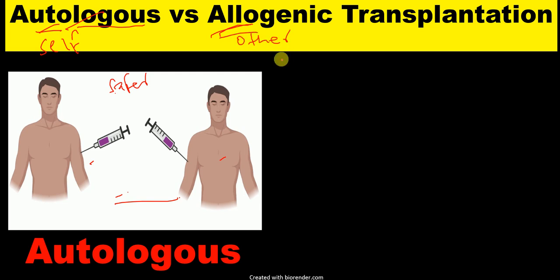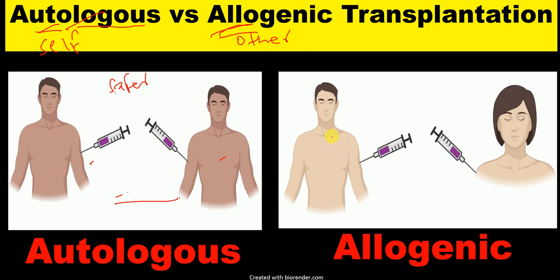So here, the person donating the stem cell is different from the person receiving the stem cells. As you can see here, this is the man who is donating stem cells and this is the woman who is receiving the stem cells donated from this man. This kind of transplantation is called allogeneic transplantation.